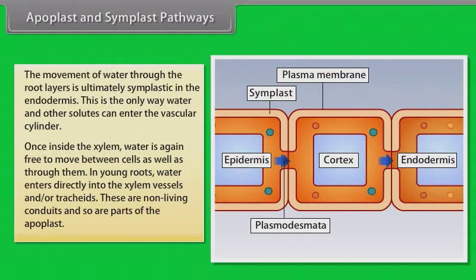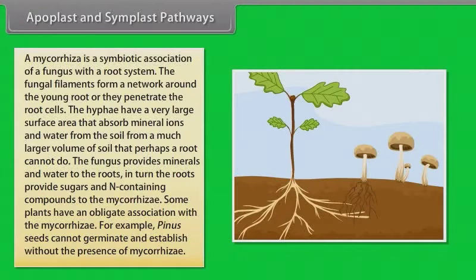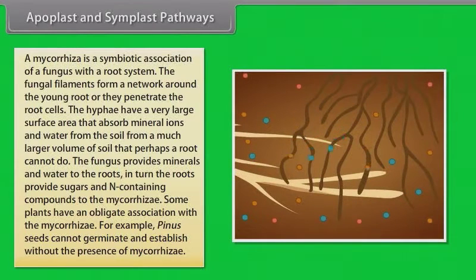Do you know that some plants have additional structures associated with them that help in water and mineral absorption? A mycorrhiza is a symbiotic association of a fungus with a root system. The fungal filaments form a network around the young root or they penetrate the root cells. The hyphae have a very large surface area that absorb mineral ions and water from the soil from a much larger volume of soil that perhaps a root cannot do. The fungus provides minerals and water to the roots. In turn, the roots provide sugars and nitrogen containing compounds to the mycorrhizae. Some plants have an obligate association with the mycorrhizae. For example, pinus seeds cannot germinate and establish without the presence of mycorrhizae.